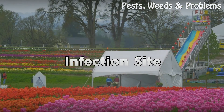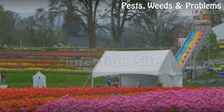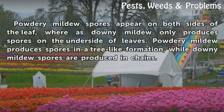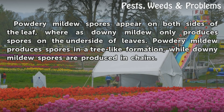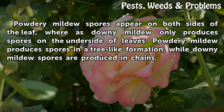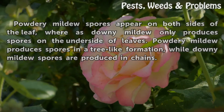Infection site: Powdery mildew spores appear on both sides of the leaf, whereas downy mildew only produces spores on the underside of leaves. Powdery mildew produces spores in a tree-like formation, while downy mildew spores are produced in chains.